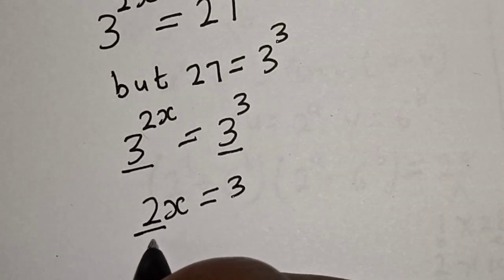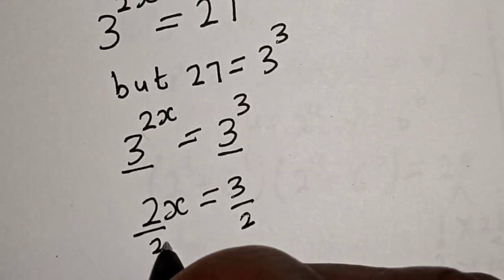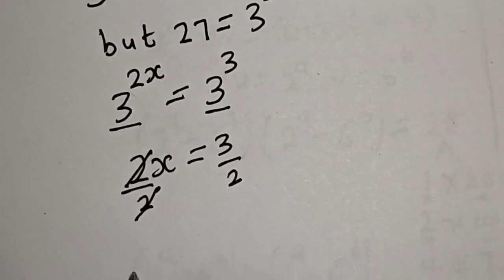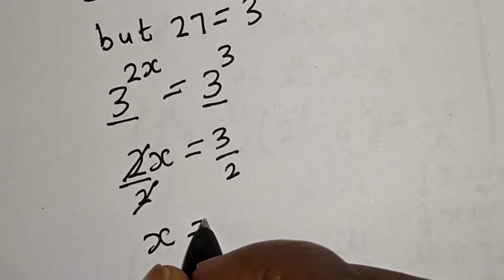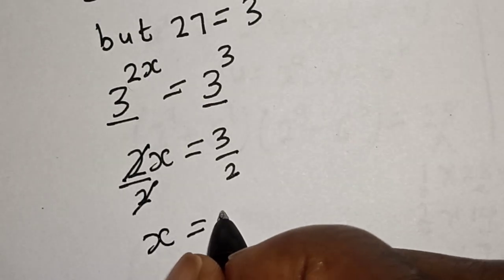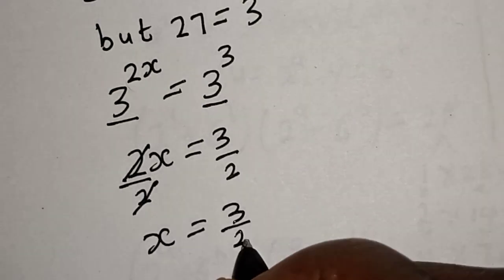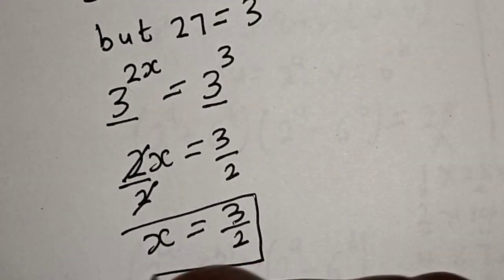Let's divide both sides by 2. Divided by 2 — this will cancel. S is equal to 3 over 2. That is our final answer.